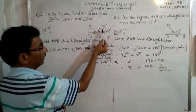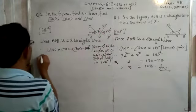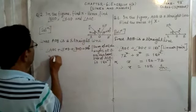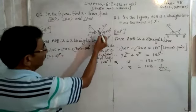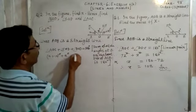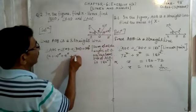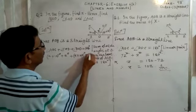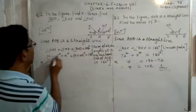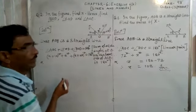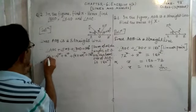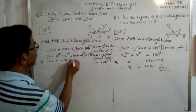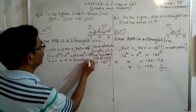So, AOC plus COD plus BOD equals 180 degrees. Now, angle AOC is x plus 10 degrees, angle COD is x degrees, and angle BOD is x plus 20 degrees. So we write: (x + 10) + x + (x + 20) = 180 degrees. We cancel the degrees from both sides and open the brackets.